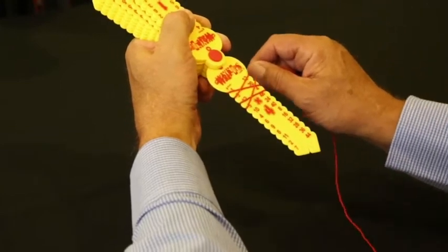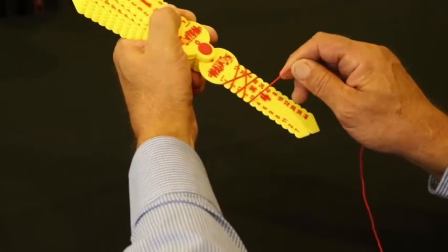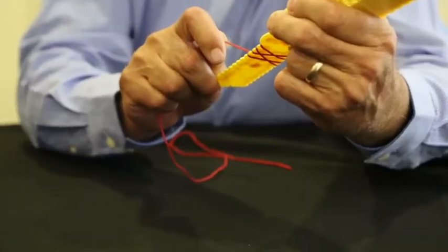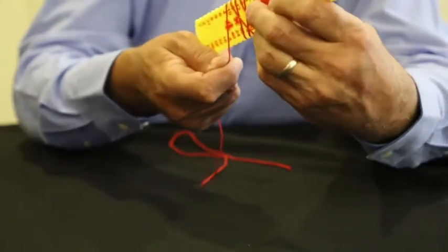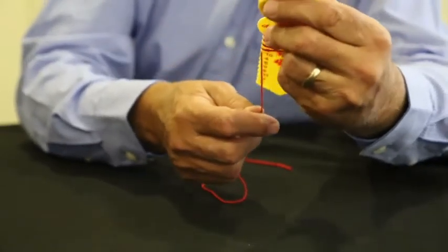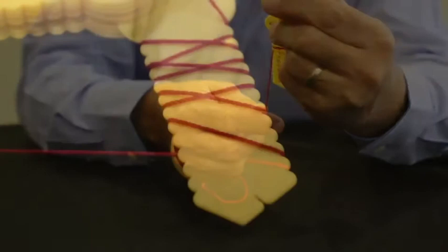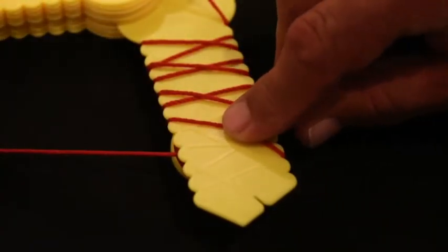One of the unique features of learning wrap-ups is that it is self-correcting. At any point, the child can stop and turn the wrap-up over to see if the string has covered the raised lines on the back. If the string covers the lines, then the wrap-up has been done correctly.